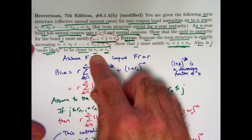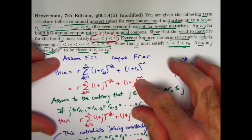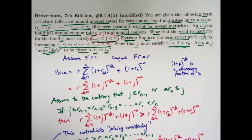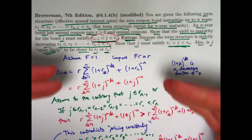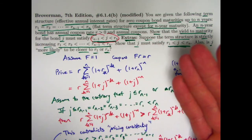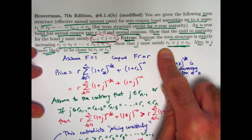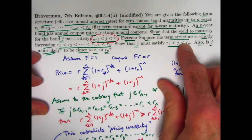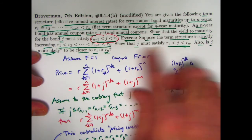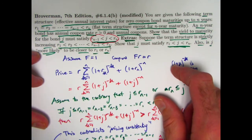Is j more likely to be closer to r_1 or r_n? Think about it: the coupon amounts for the bond are relatively small compared to the redemption value in general — r is relatively small compared to 1. Because of pricing consistency and the fact that the redemption amount is larger than the coupon amounts, you should expect j to be closer to r_n than to r_1. J is kind of a weighted average of the r's, and you should expect it to be closer to r_n because you've got the most weight coming from the redemption value.